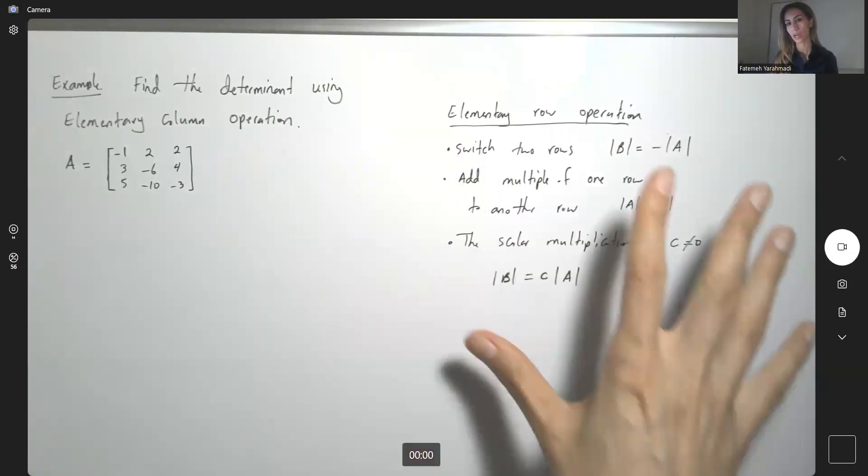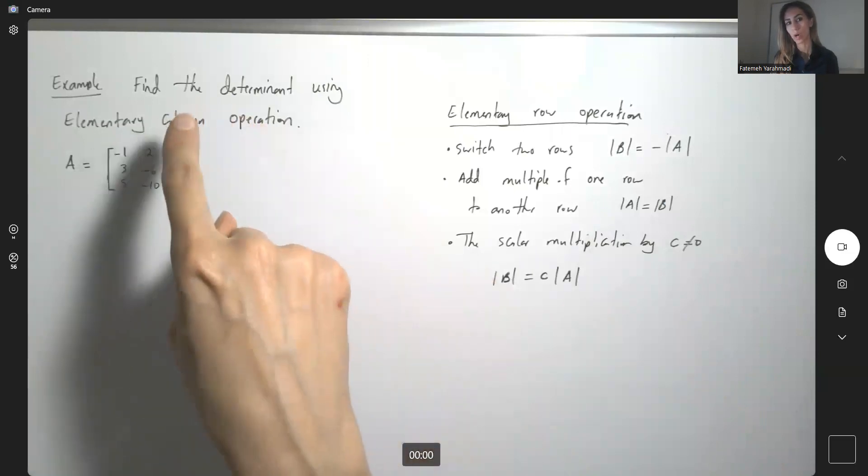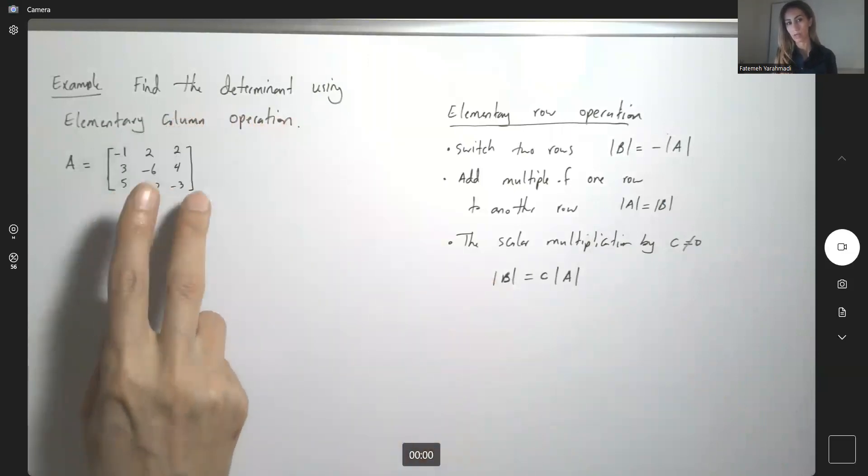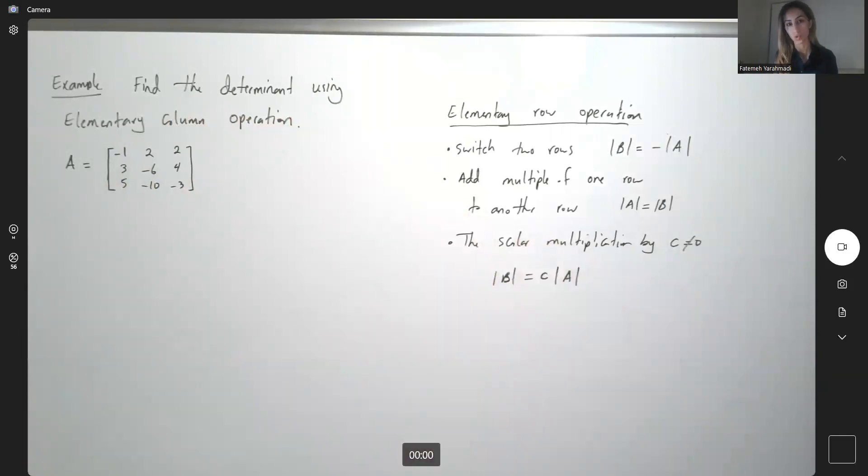Now, here we can just generalize the idea to column operation, working with columns, interchanging two columns, adding multiples of the first column by a scalar, and adding that to the next column, and so on.